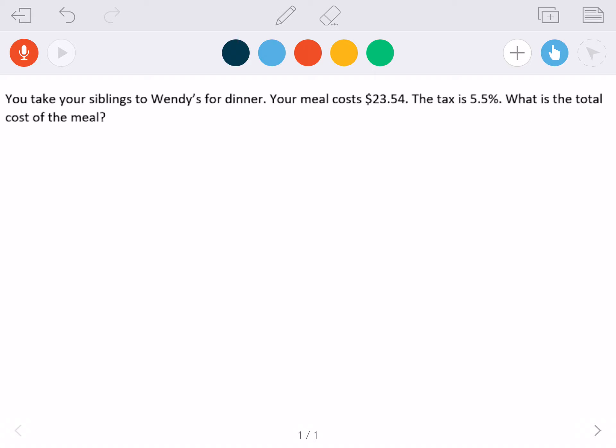The first thing that we have to do when dealing with any of these types of problems is we need to take our tax, which is 5.5%, and change that percent into a decimal. When we want to change a percent to a decimal, we move the decimal two places to the left.